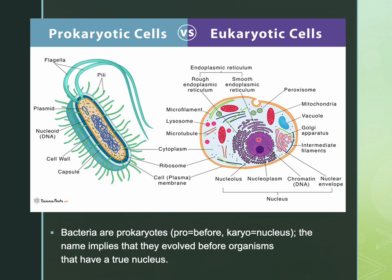With this nuclear envelope difference, prokaryotic cells do not have any membrane-bound organelles at all, whereas eukaryotic cells have lots of membrane-bound organelles to keep things compartmentalized and organized within the cells — things like mitochondria, vacuoles, the Golgi apparatus — all with different jobs within the cytoplasm. Prokaryotic cells don't have any of that organization; they're much simpler organisms.